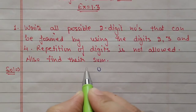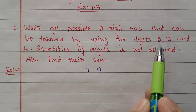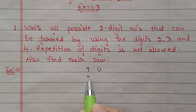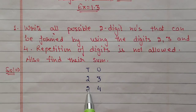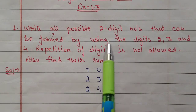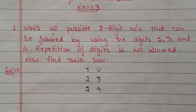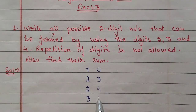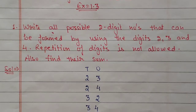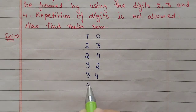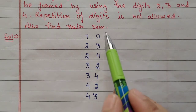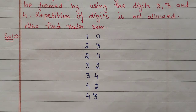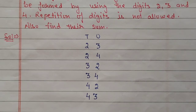For a two-digit number we will have two places: ones place and tens place. If the tens place we fill with 2, then to fill the ones place we have two options — 3 or 4. We cannot fill with 2 because repetition is not allowed. If we fill tens place with 3, then ones place can be 2 or 4. If tens place is 4, then ones place can be 2 or 3. So these six possible numbers we can form with the help of 2, 3, and 4.